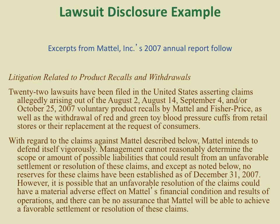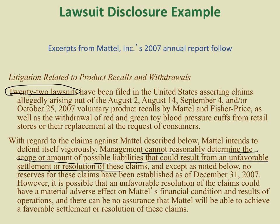Here is an example of lawsuit footnote disclosure from a tech corporation's 2007 annual report. In that year, there were 22 losses across the nation for their products. Since they could not reasonably determine the scope or amount of possible liabilities from an unfavorable settlement or resolution — meaning the loss contingency amount was not estimable — they still disclosed this in a footnote, as it could be useful to readers of their financial report.